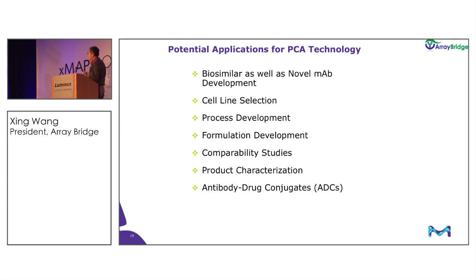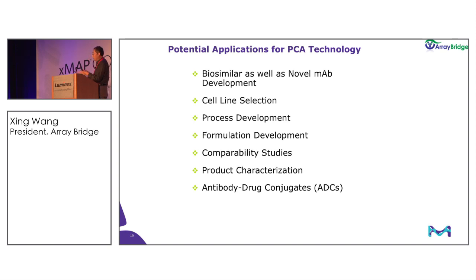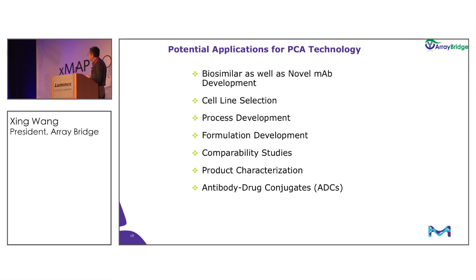Briefly, this technology can be used in different areas of bioprocess development, starting from cell line selection — which is where it is most widely used. In biosimilar development, you can quickly tell even from crude extract whether your molecule from your cell line is similar to the innovator molecule, saving significant downstream cost. We have cases where biosimilar developers have a molecule showing significant difference, causing that product to be stopped and restarted from cell line selection. The technology can also be used in formulation development, comparability studies, and ADC development.